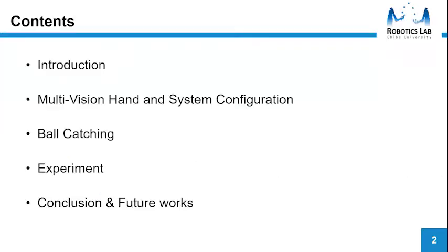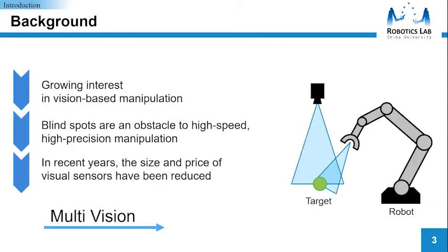This is the outline of the presentation. First of all, I'll explain about research background. The importance of vision-based manipulation is increasing. In vision-based manipulation, blind spots due to occlusion and narrow view restriction are obstacles to achieving high-speed, high-precision manipulation.